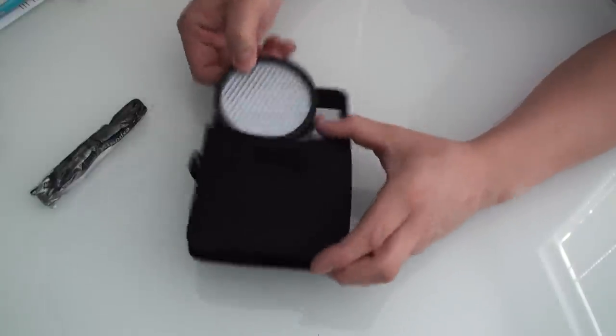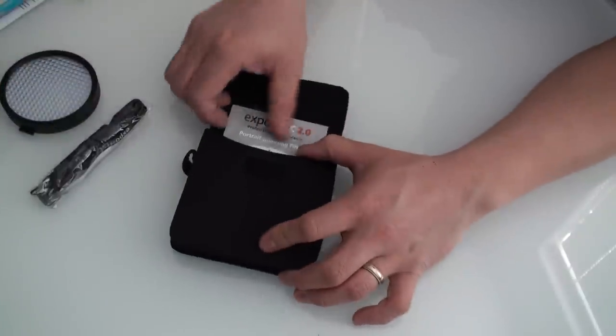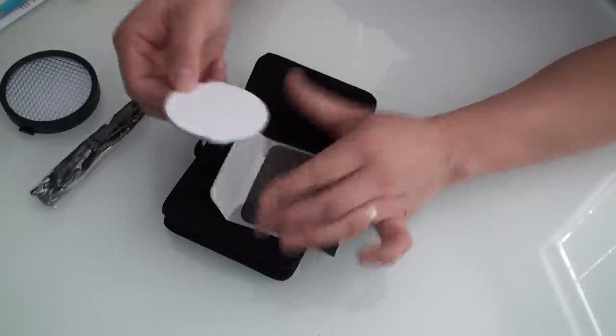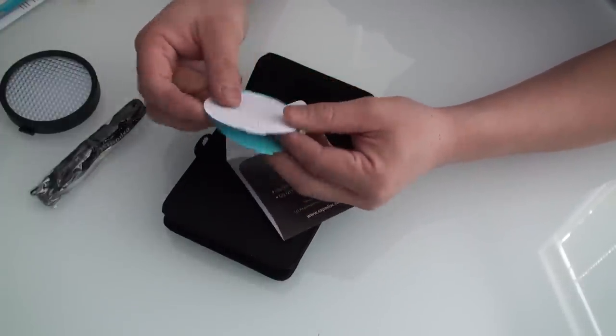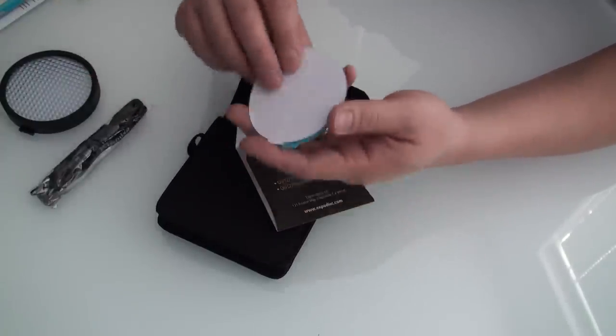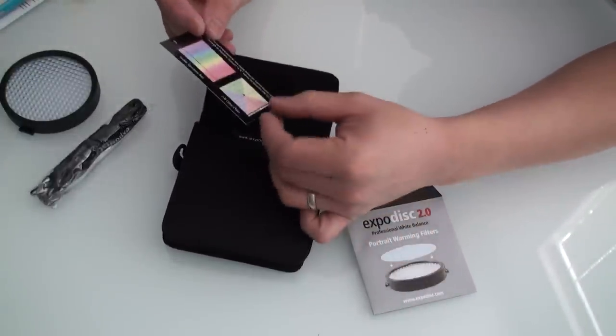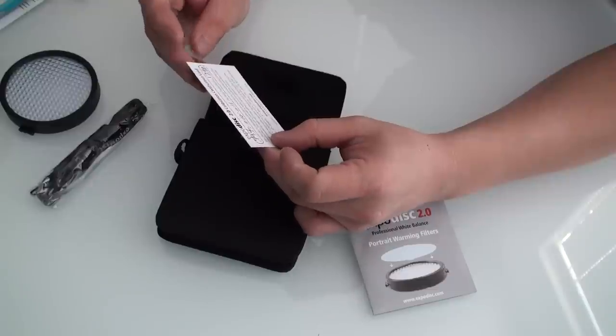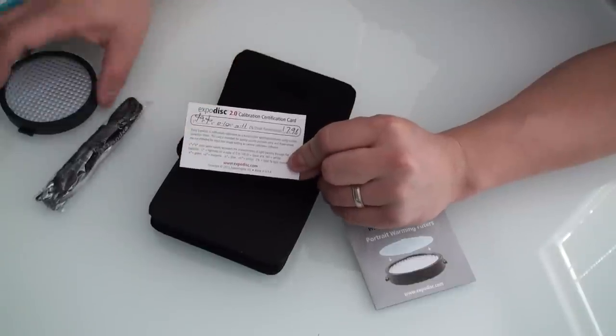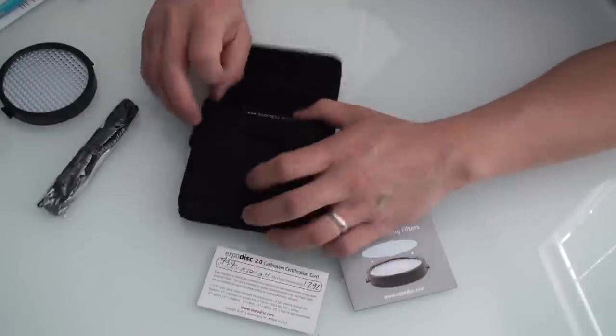Inside the ExpoDisc itself is of course the ExpoDisc and I have a 77mm version here. The included warming filters which inside it appears to have some separating papers and a whole bunch of these different sort of gel-like filters. We've also got what it looks like an ExpoDisc calibration certificate card which is always great. So they've actually validated that the manufacturing quality of this disc meets specifications.